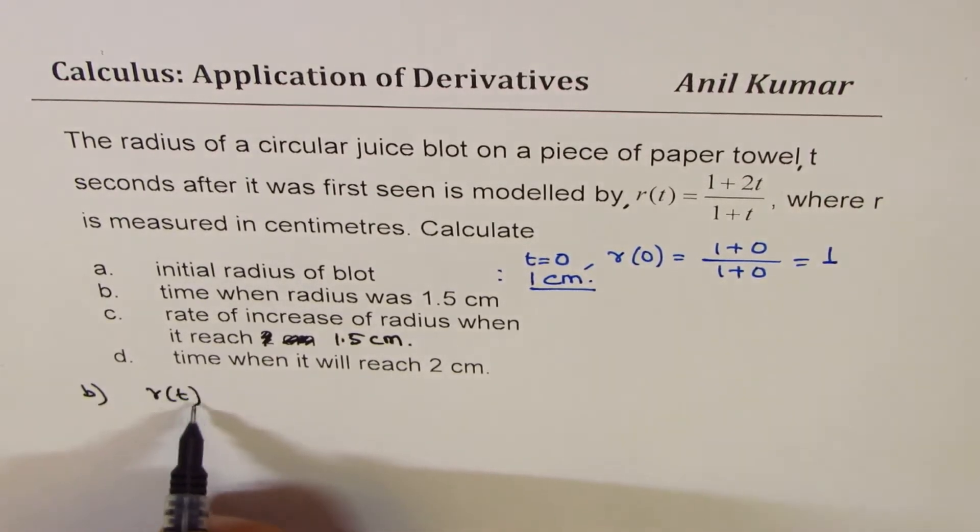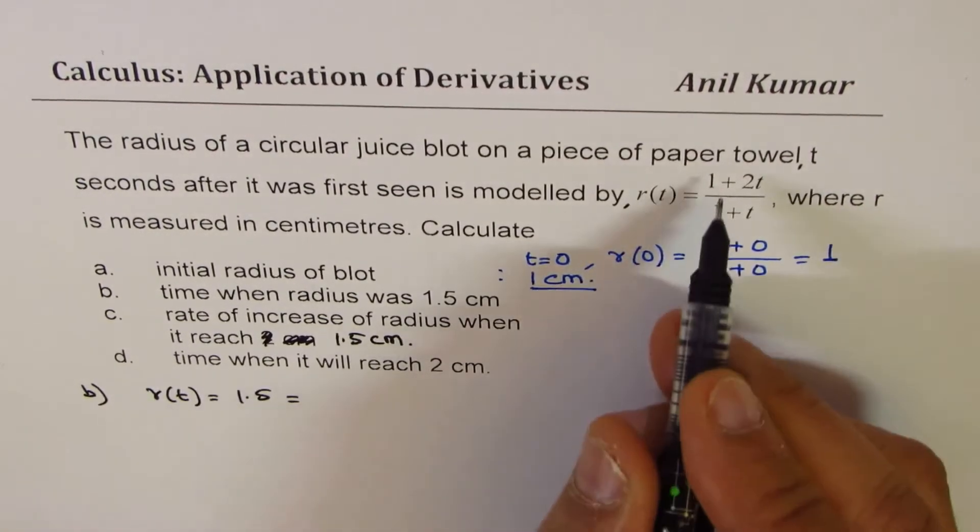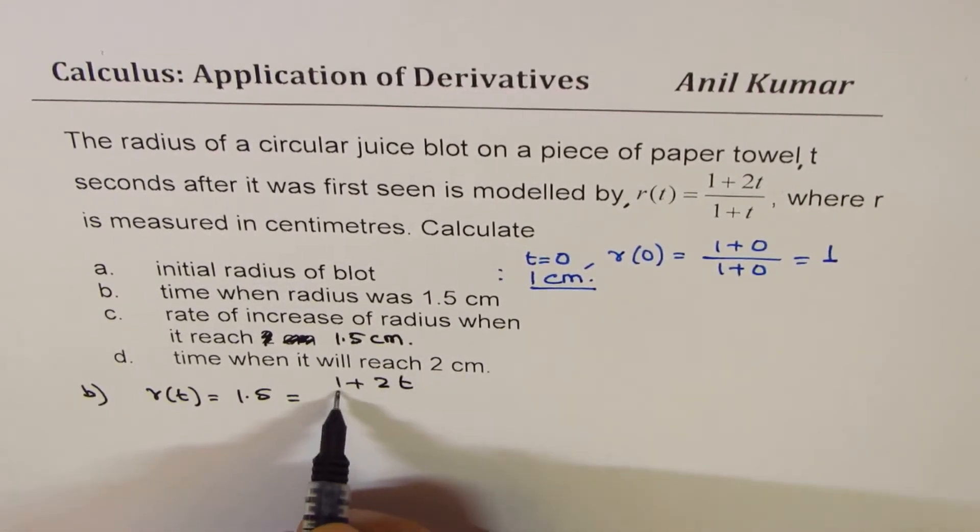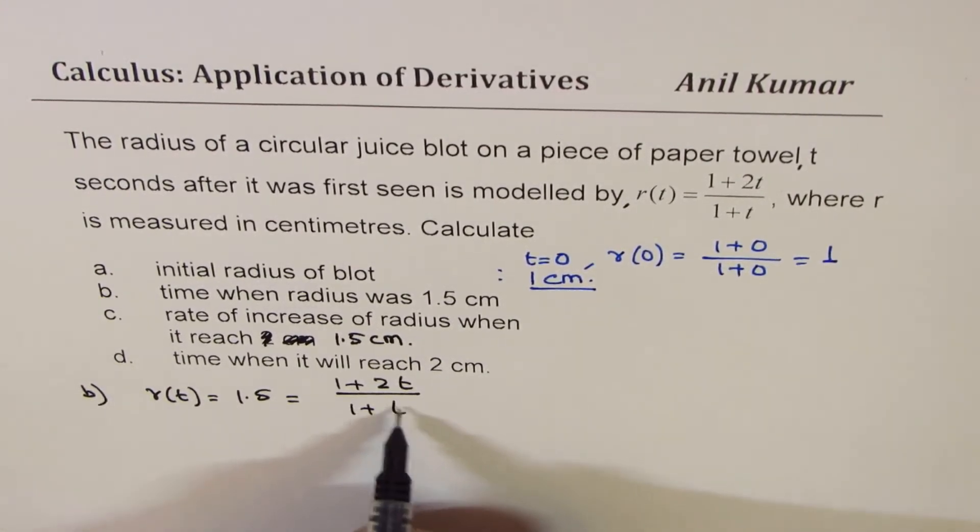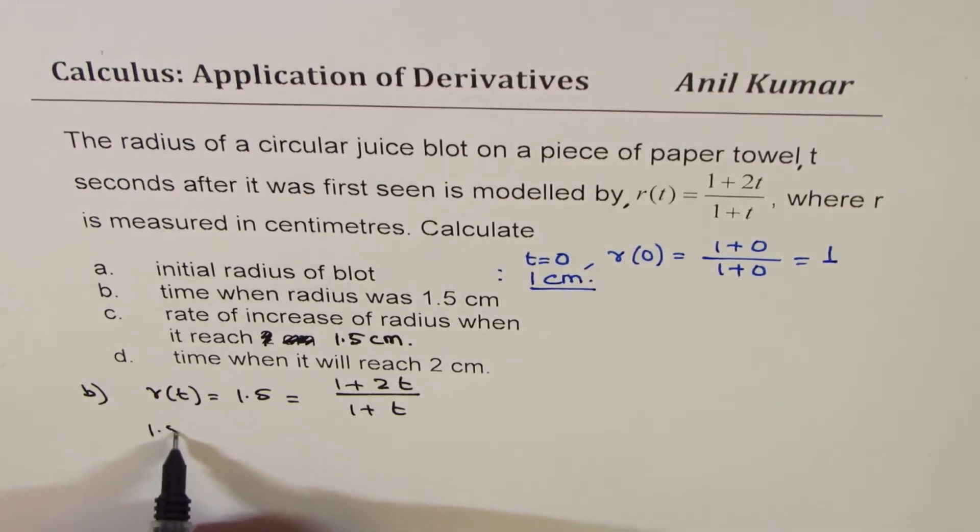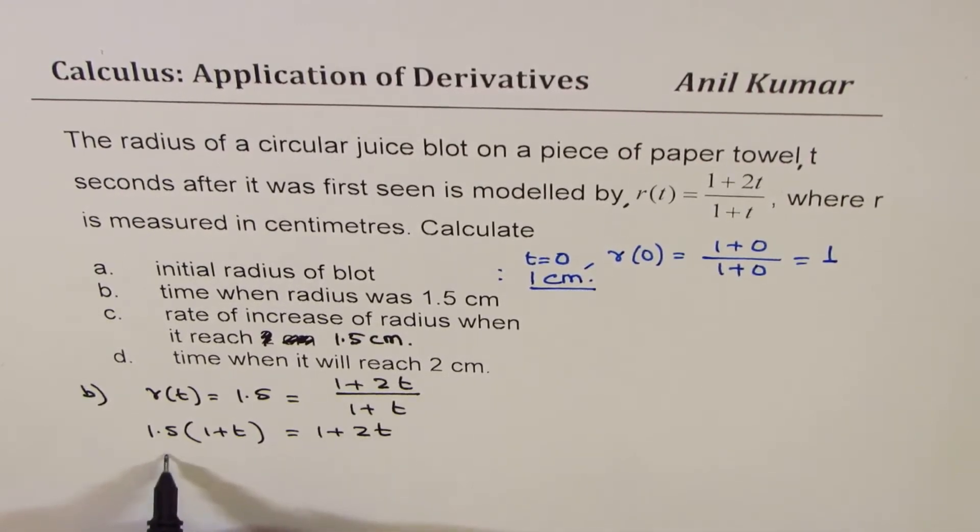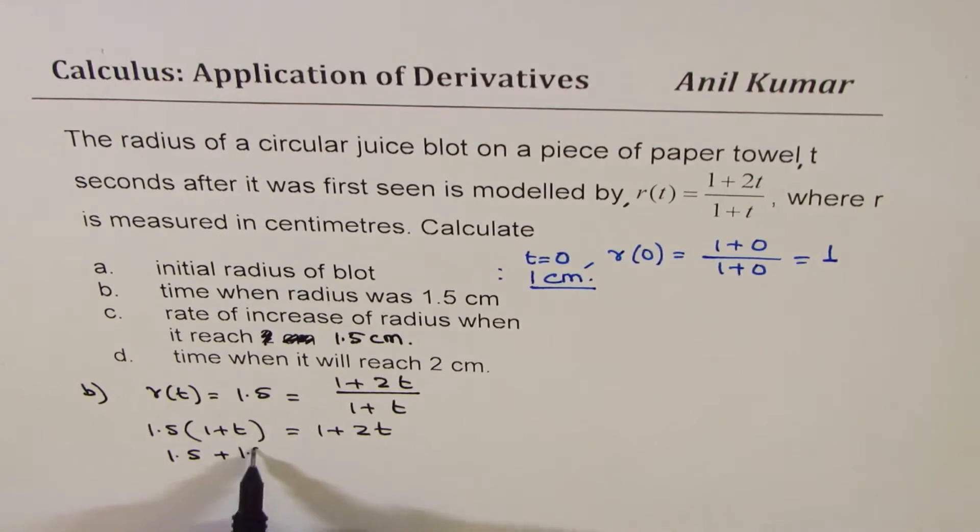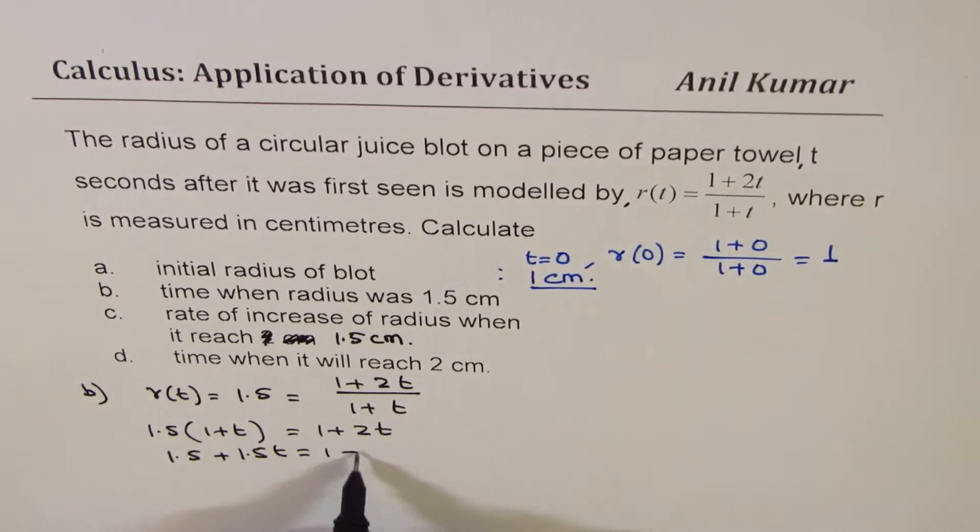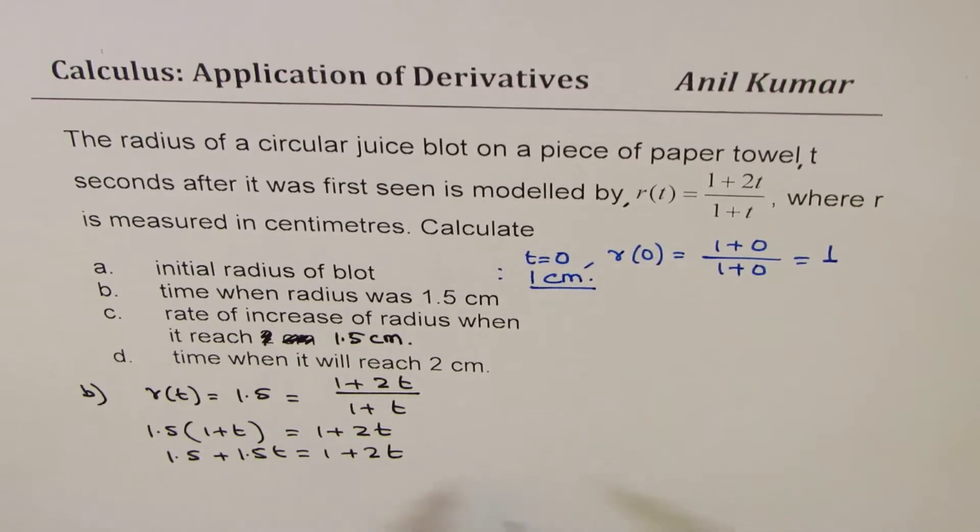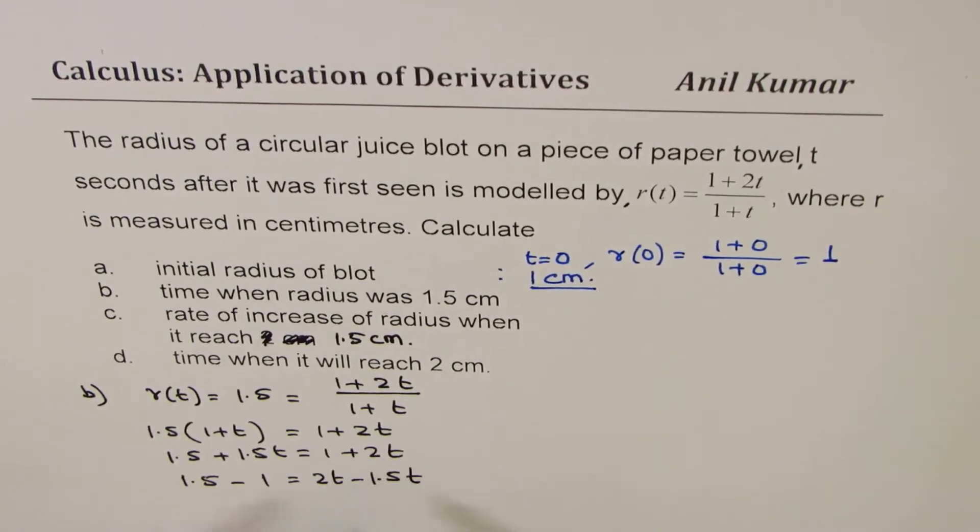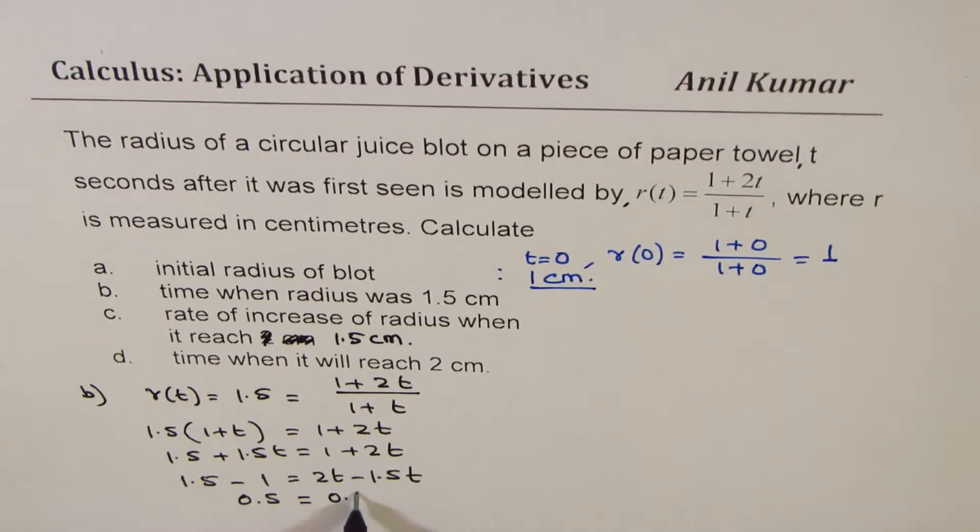r(t) is 1.5 for us and we need to find time: 1.5 = (1 + 2t)/(1 + t). Cross multiply: 1.5(1 + t) = 1 + 2t, so 1.5 + 1.5t = 1 + 2t. Bringing t's on the right side, we get 1.5 - 1 = 2t - 1.5t, so 0.5 = 0.5t.